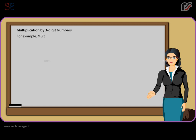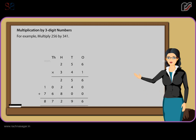For example, multiply 256 x 341. First multiply 256 x 1, then by 40 and finally by 300. Thus, the product is 87,296.